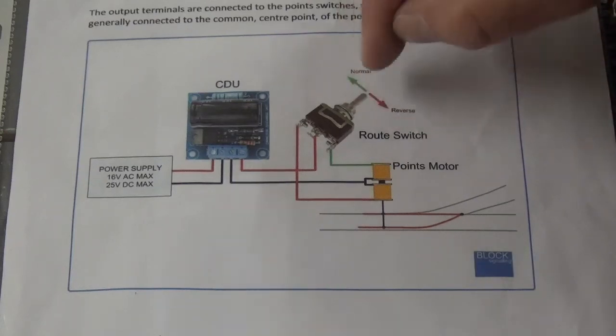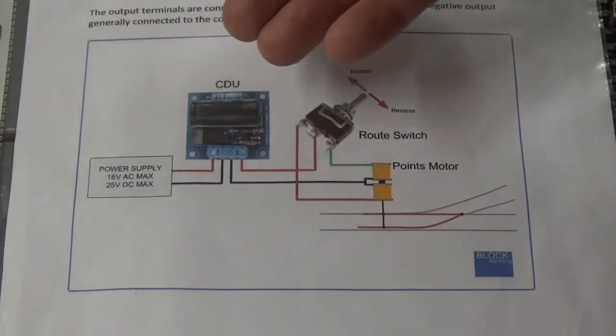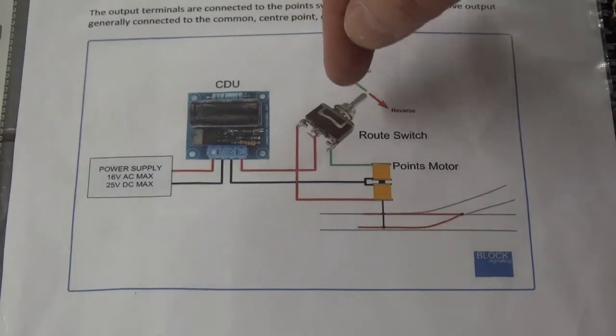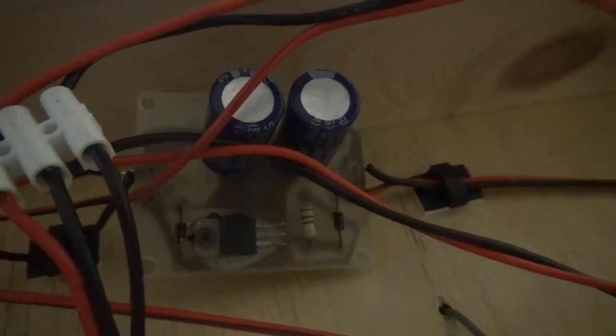the other one must be in the neutral position. Otherwise it's taking all of the power, it seems, from the CDU. So you must have one in neutral position for the other one to operate.